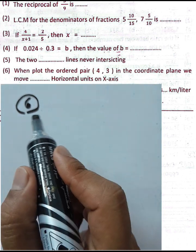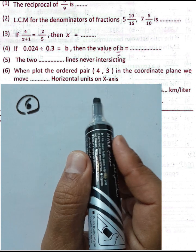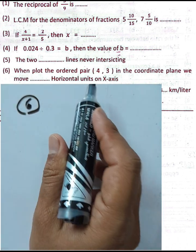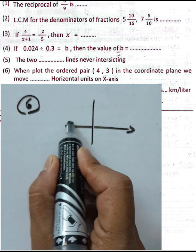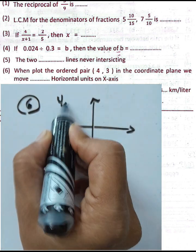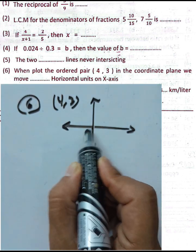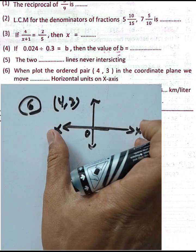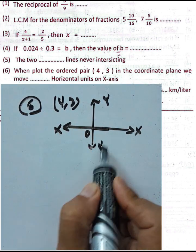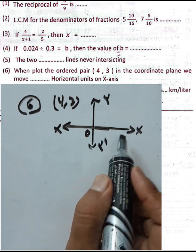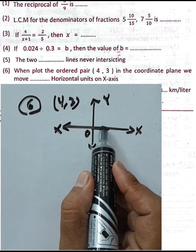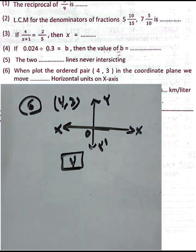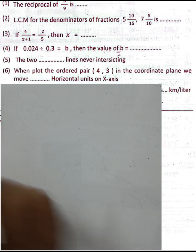Question number six: to plot the point (4, 3) in the coordinate plane, move horizontally along the x-axis and vertically along the y-axis. Move 4 horizontal units on the x-axis. Write 4 in the space.